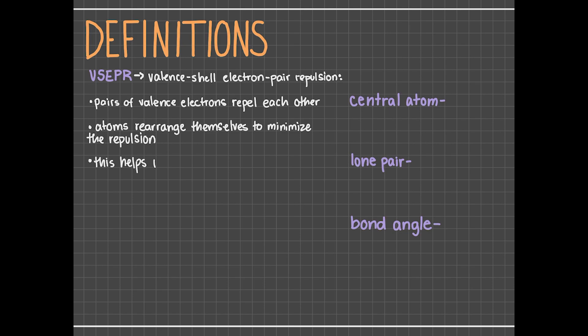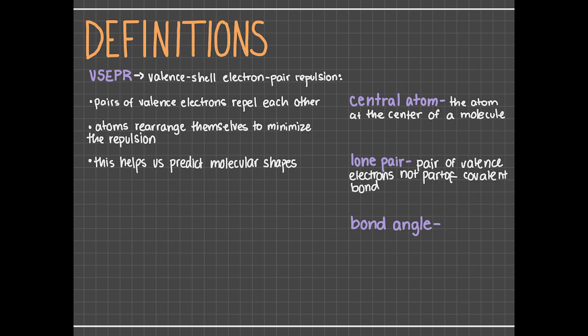But first, let's look at some key terms you need to know to understand these molecular shapes. A central atom is the atom at the very center of a molecule, and usually the first element in a chemical formula. You should also know what lone pairs are. A lone pair is an atom's pair of valence electrons that's not part of a covalent bond. And bond angles are the angles between adjacent bonds of an atom.